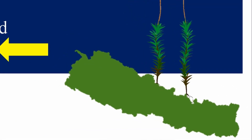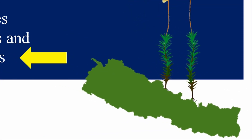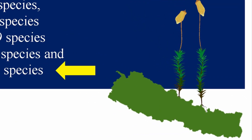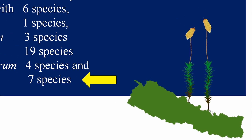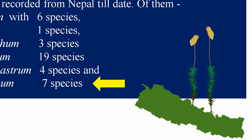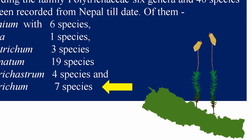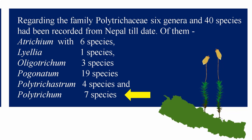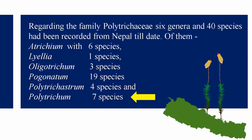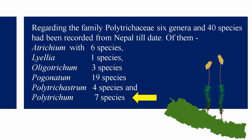Regarding the family Polytrichaceae, six genera and 40 species have been recorded from Nepal till date. The genus Polytrichum consists of seven species which are distributed in the temperate zones, in which elevation ranges from 1500 to 4800 meters.